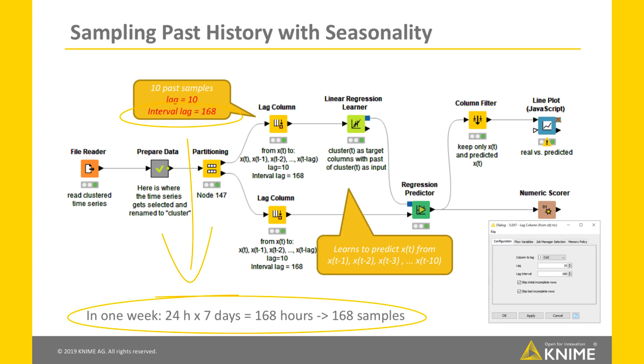With these settings, we get a vector of past 10 samples, the 10 samples being exactly 168 hours apart from each other, that is, one week apart from each other. This vector of past samples is used to train the model to predict the value for the current sample.